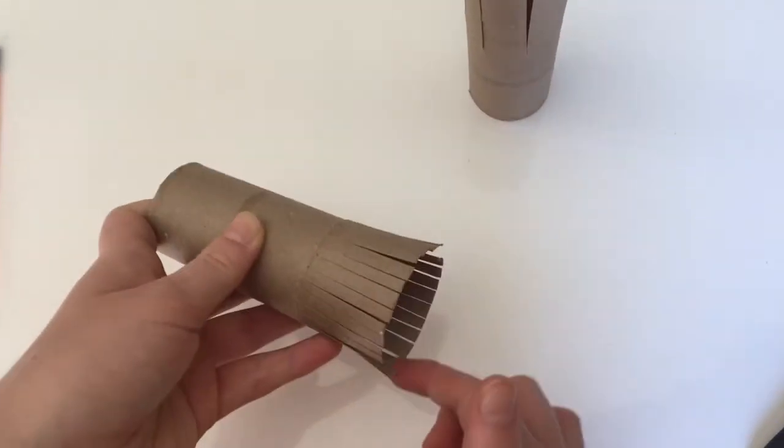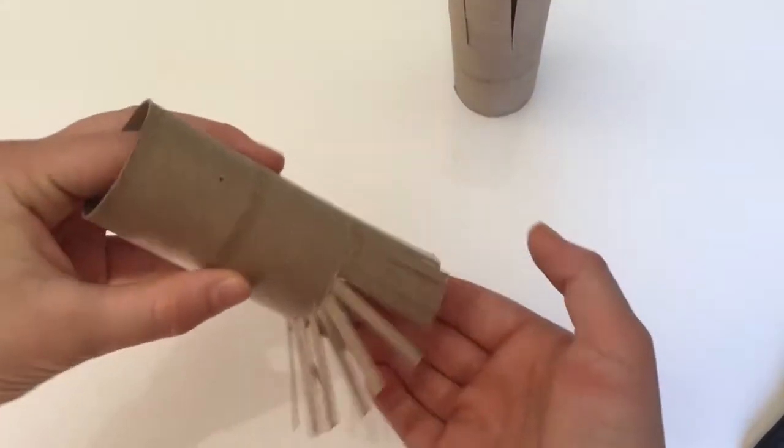So once you're done cutting your pattern around your toilet paper tube you're just going to bend it out like this.